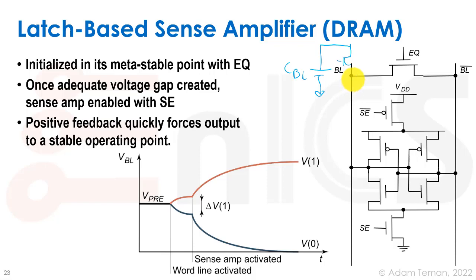Although we have a single-ended readout, there are ways to create a differential comparison. One approach uses the other bit line held at VDD/2 as a reference to sense the delta. Another uses a dummy or replica row from the opposite side of the array as the reference bit line. Both methods provide a more robust differential readout compared to a purely single-ended approach.